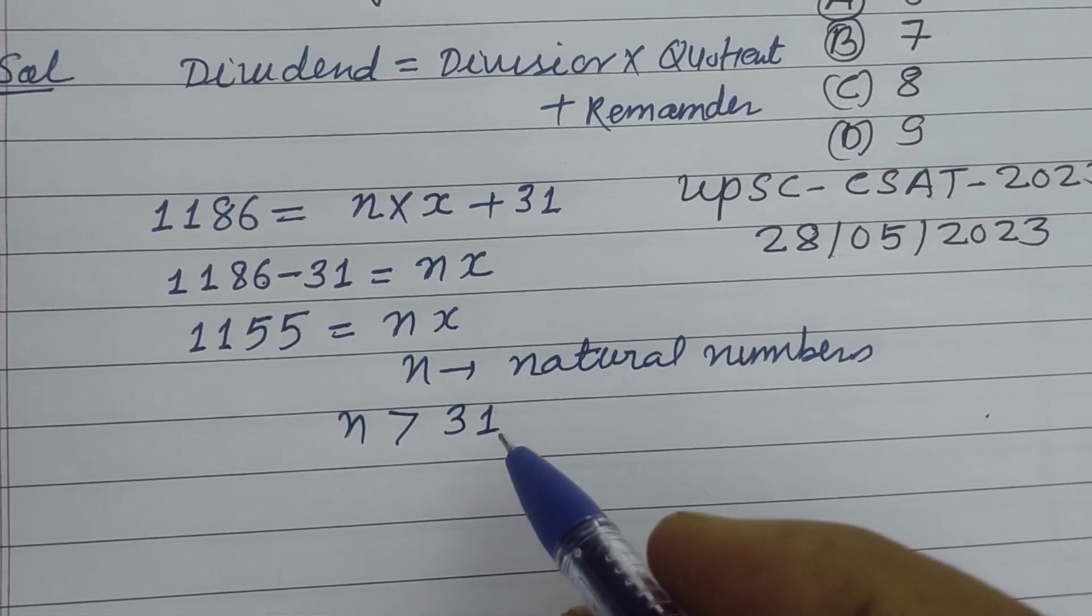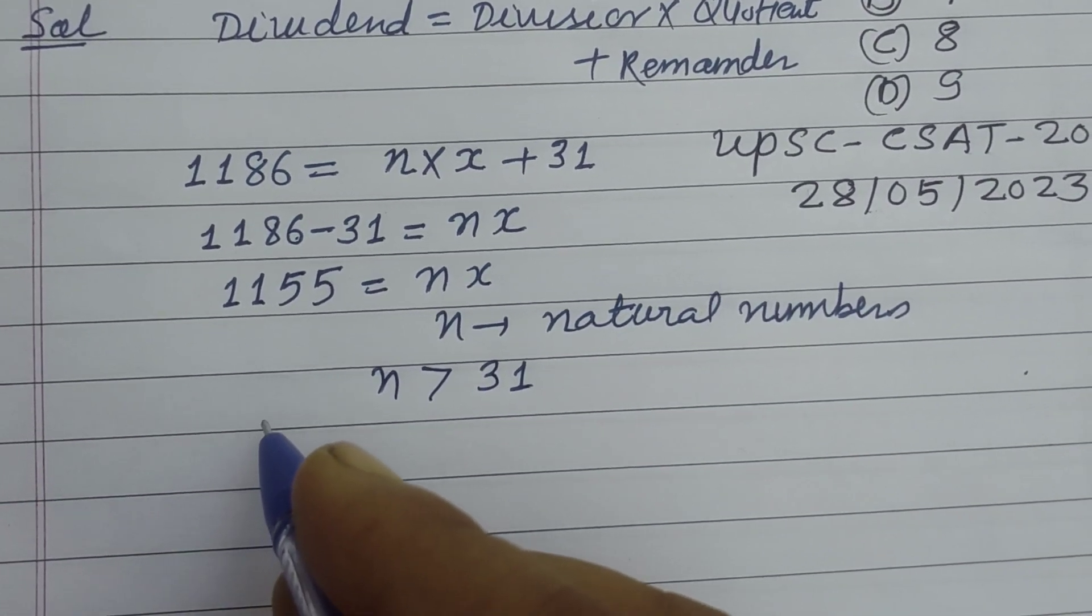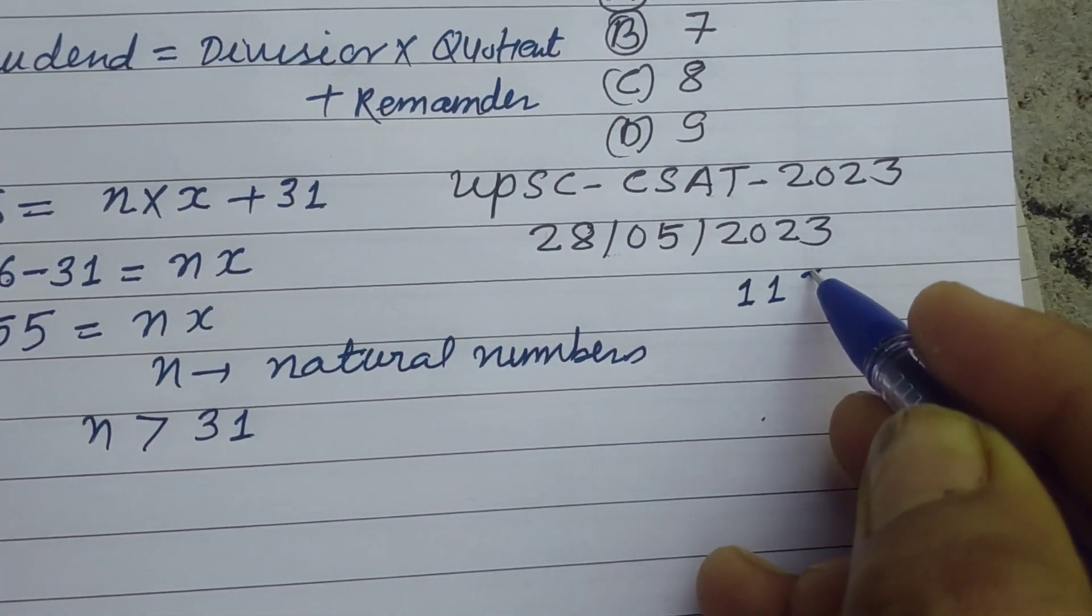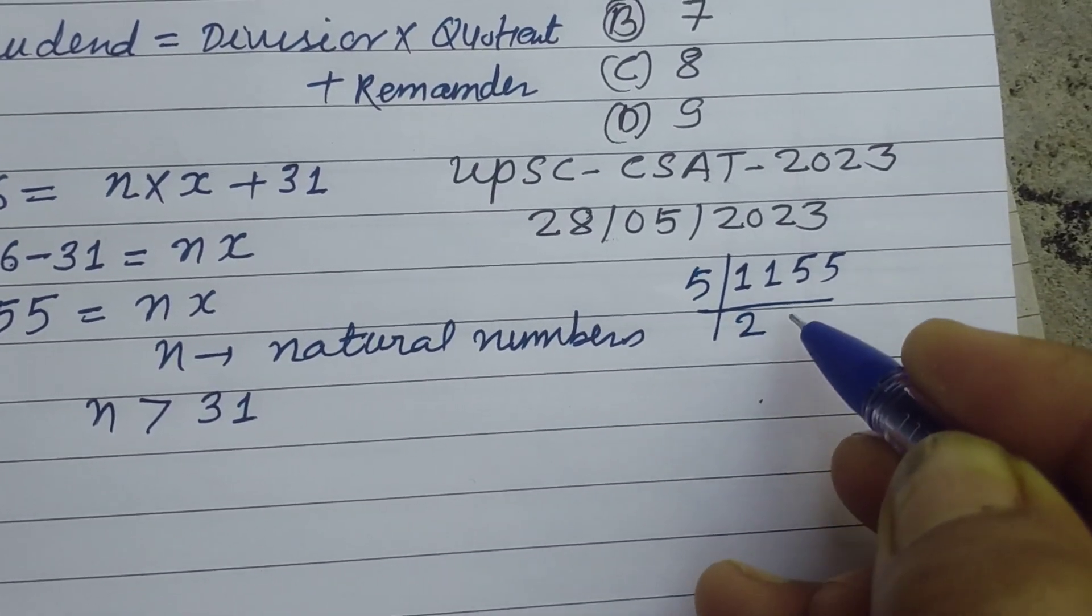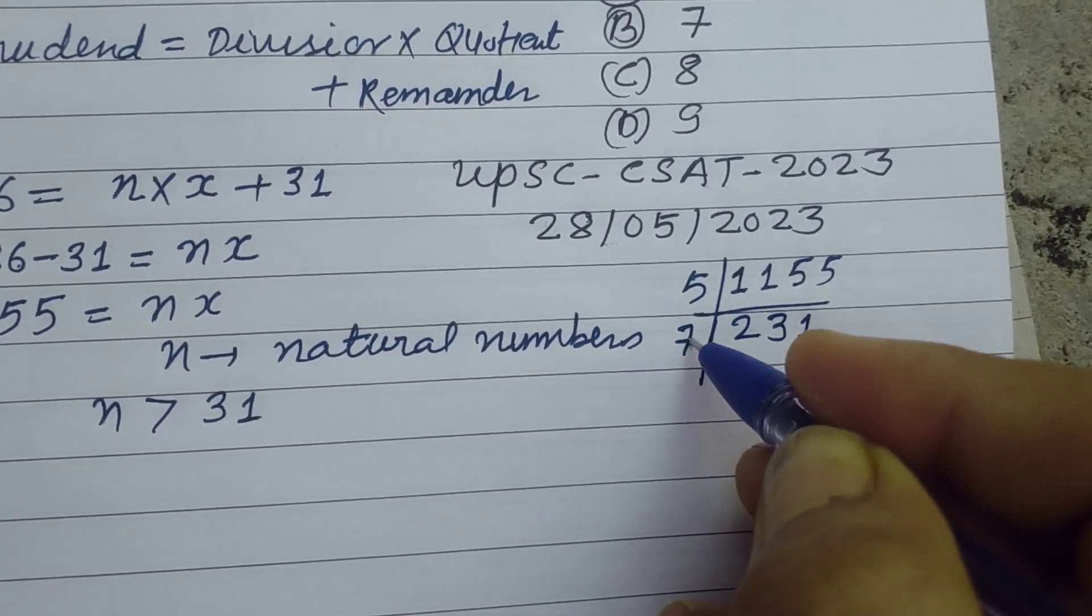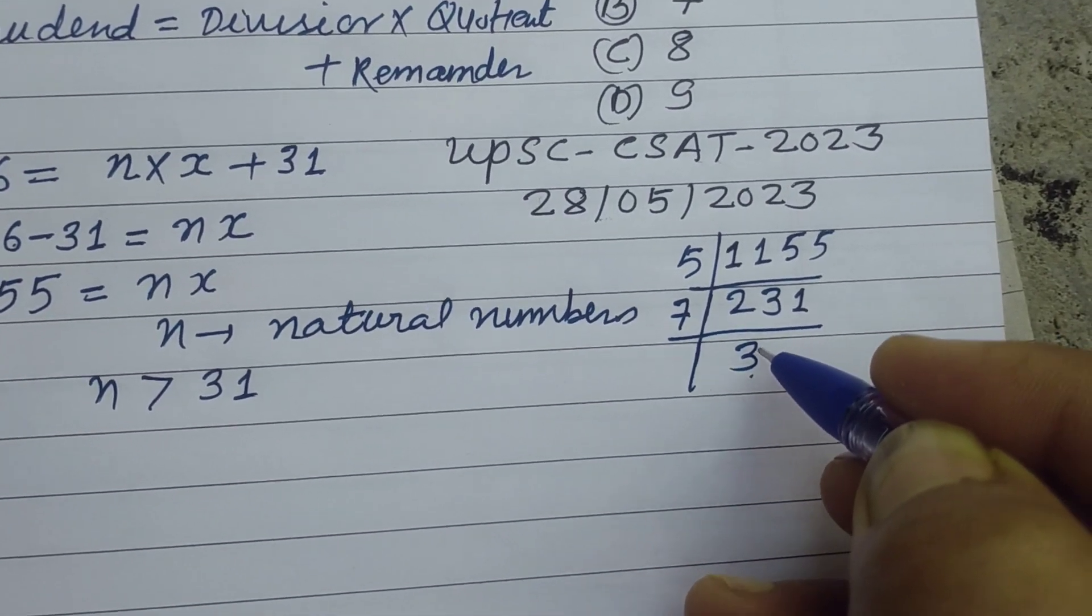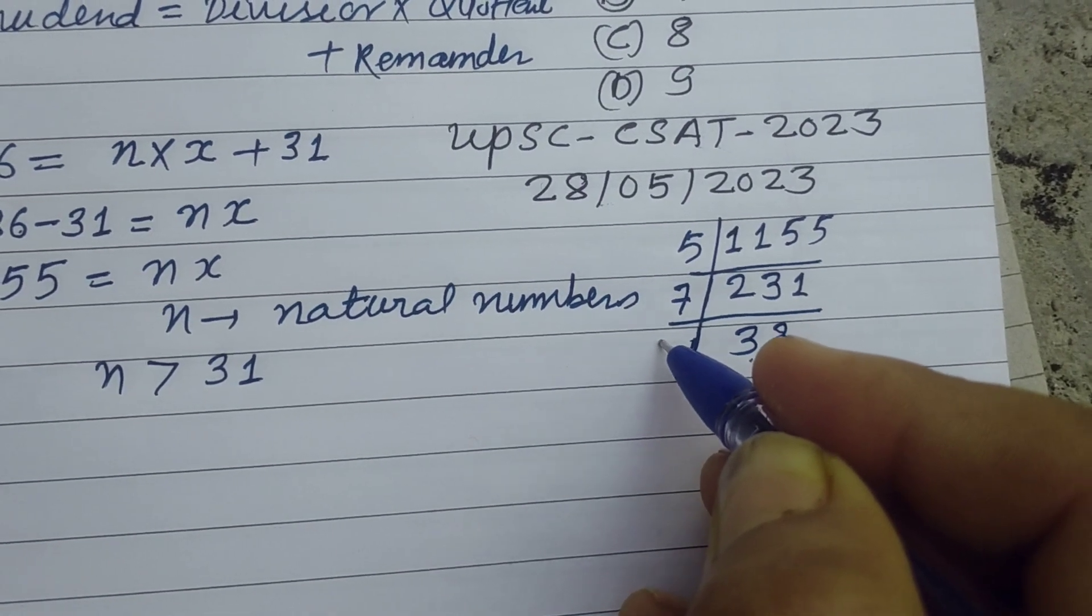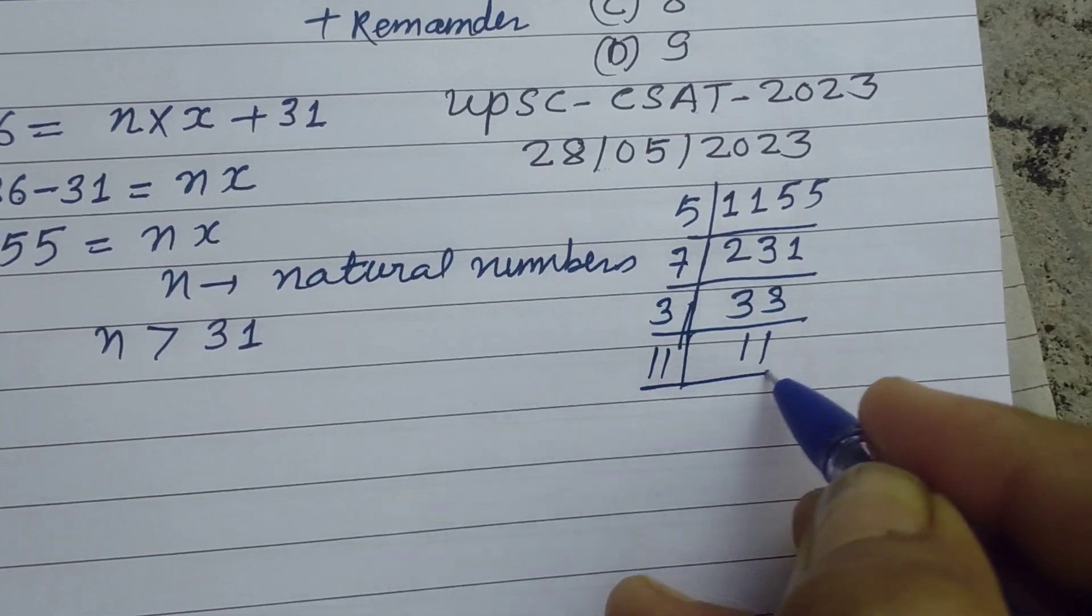Now we factorize 1155. First we divide it by 5: 5 × 2 is 10, 5 × 3 is 15, we get 231. Now divide by 7: 7 × 3 is 21, we get 33. Now divide by 3, we get 11. Divide by 11, we get 1.